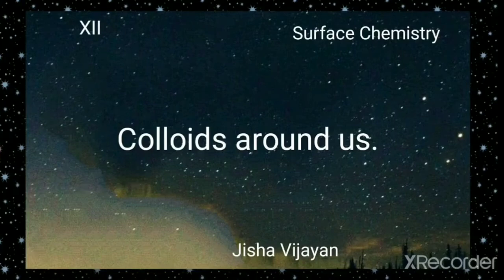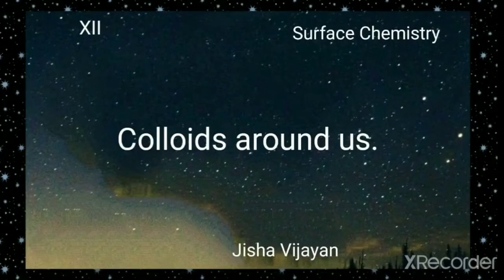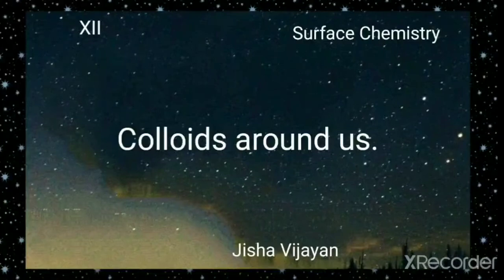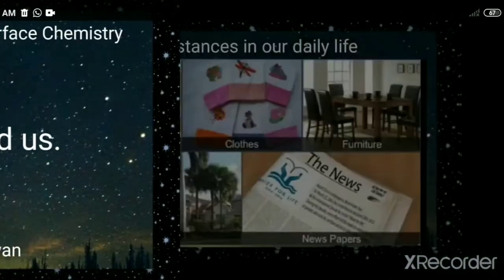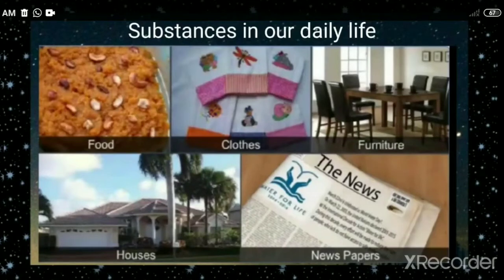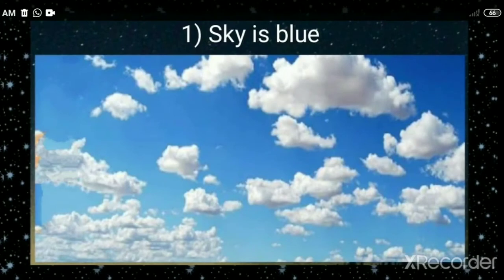Hello students, after the discussion on colloids, their types, preparation, and properties, let us discuss where colloids are found around ourselves. The substances which we use in our daily life, like the meals we eat, clothes we wear, the wooden furniture we use, the houses we live in, and the newspapers we read, are largely composed of colloids.